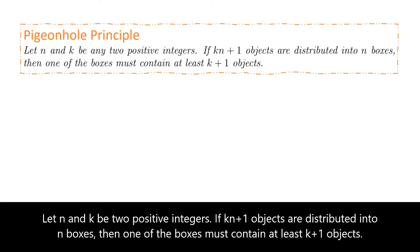Let n and k be two positive integers. If kn plus one objects are distributed into n boxes, then one of the boxes must contain at least k plus one objects.